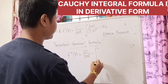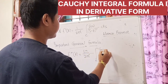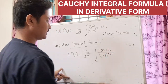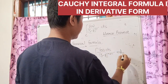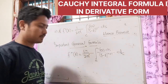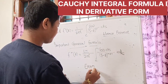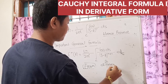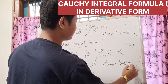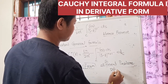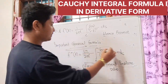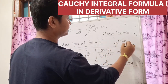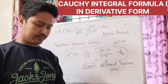Now the generalized formula: using the Cauchy integral formula in derivative form, the n-th derivative of f is f to the n-th equals n factorial divided by 2πi times integration over closed contour C of f(s)ds divided by (s minus z) to the power n plus 1. You can use this generalized formula to solve different problems in the exam. Thank you.